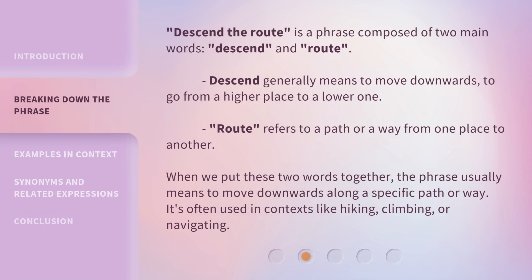'Descend the Route' is a phrase composed of two main words: Descend and Route. Descend generally means to move downwards — to go from a higher place to a lower one. Route refers to a path or a way from one place to another. When we put these two words together, the phrase usually means to move downwards along a specific path or way. It's often used in contexts like hiking, climbing, or navigating.